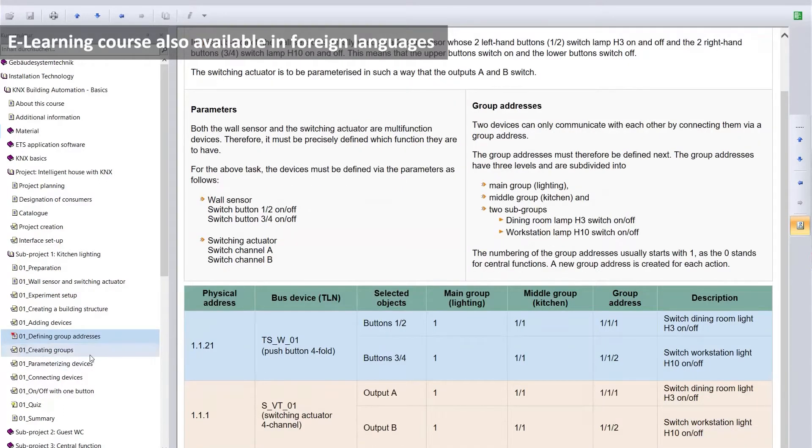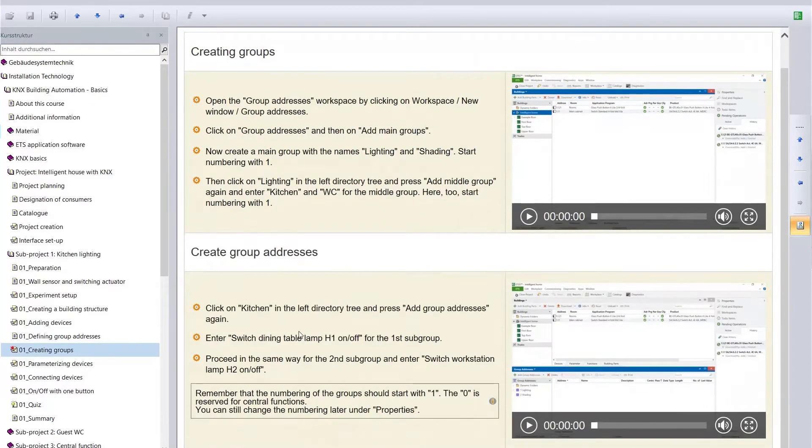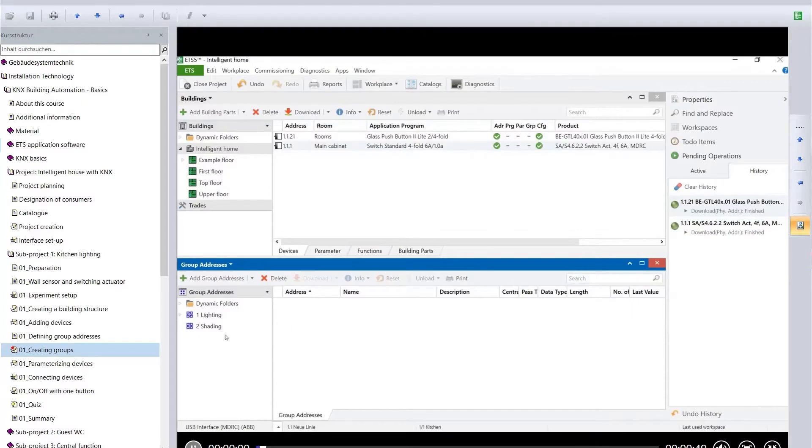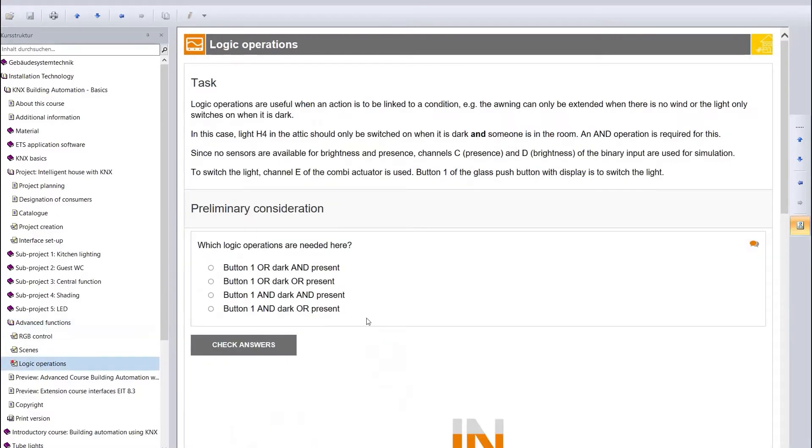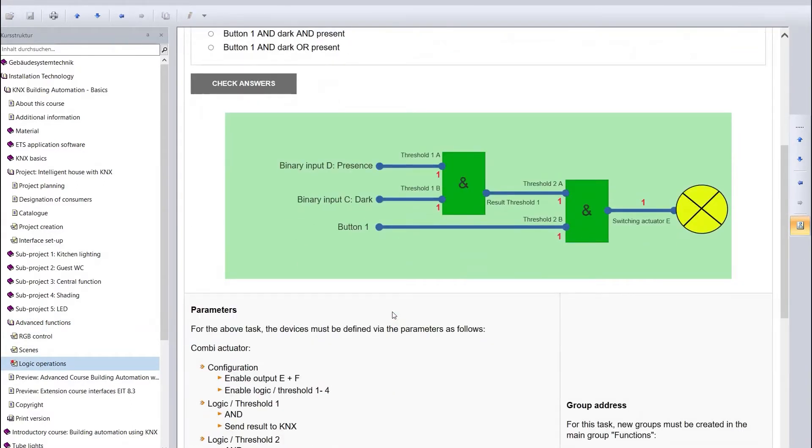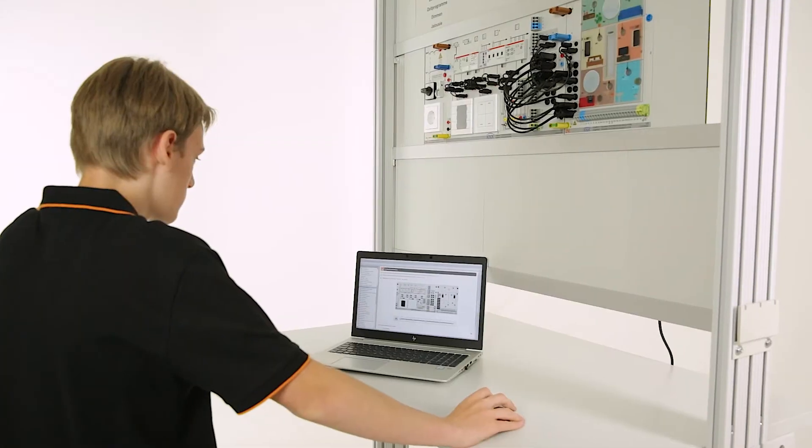The course teaches how the equipment is installed and how to handle the programming software based on a host of examples and tutorial videos. Besides such standard applications like light switches and dimmers, the course covers important subjects like time-based and logic operations or background scene control.